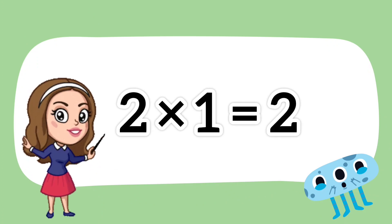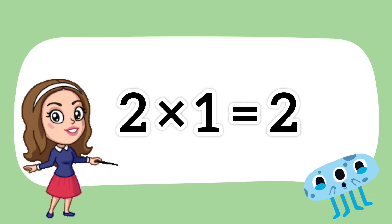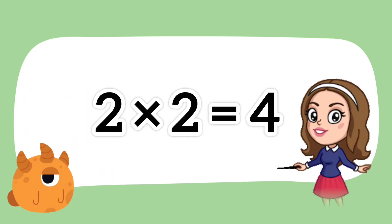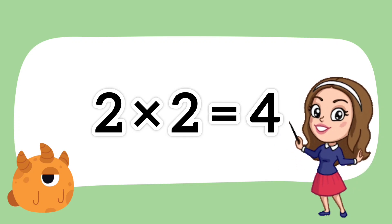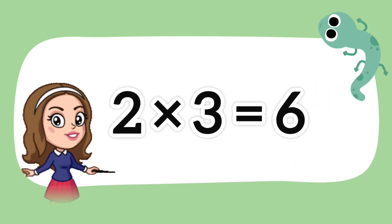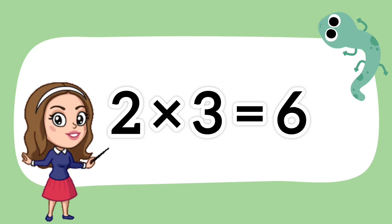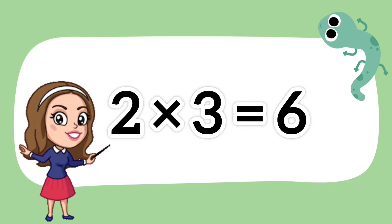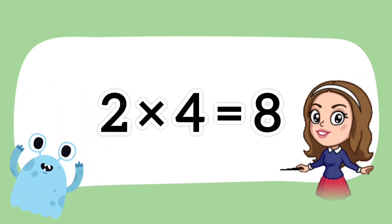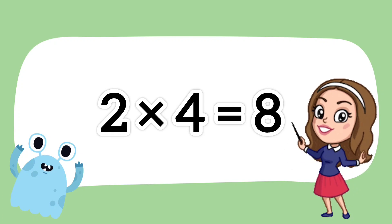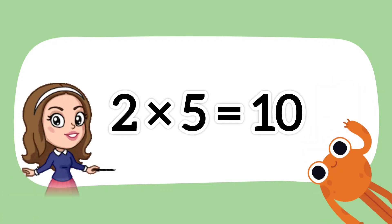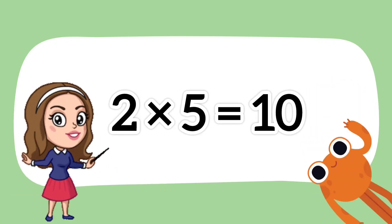Two ones are two. Two twos are four. Two threes are six. Two fours are eight. Two fives are ten.